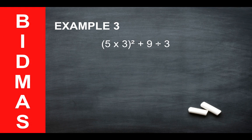Let's look at a slightly trickier example. Here we've got 5 times 3 in brackets, and this is squared, plus 9 divided by 3. So let's work in stages. The first stage is to work out the brackets. So 5 times 3 will give you 15.